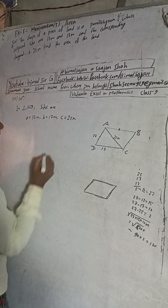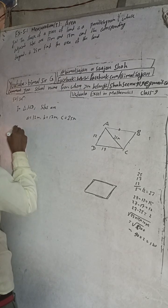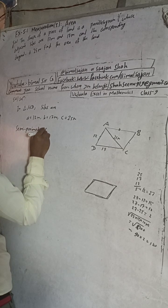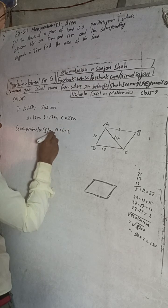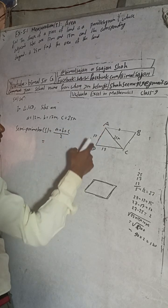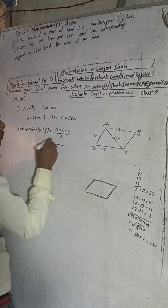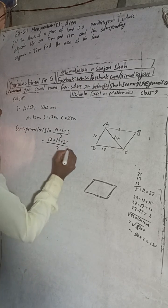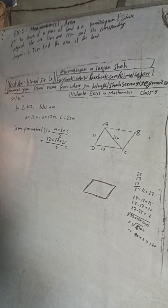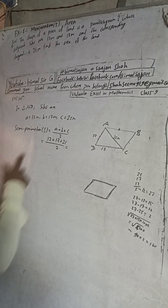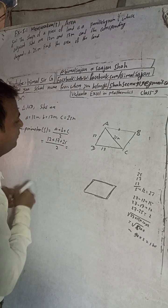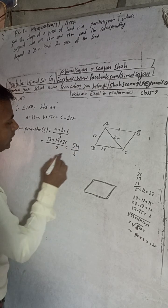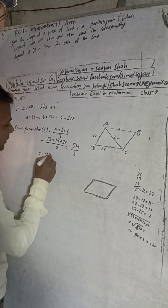Now the semi-perimeter S is equal to the formula a plus b plus c by 2, sum of all sides divided by 2. So here is 12 plus 17 plus 25 by 2. When we add this: 12, 7 to 9, 9, 5, 14, carry 1, 2, 3, 4, 5, so 54 by 2, this will be 27 meter.